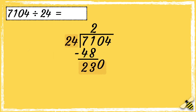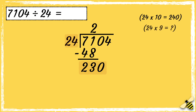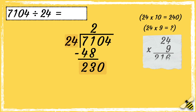We can now bring the next digit down. Now we need to work out how many times 24 goes into 230. I don't know that off the top of my head, but I do know that 24 times 10 is 240, which is too high. So I'll try 24 times 9, which is 216. So I know that 24 goes into 230 nine times.